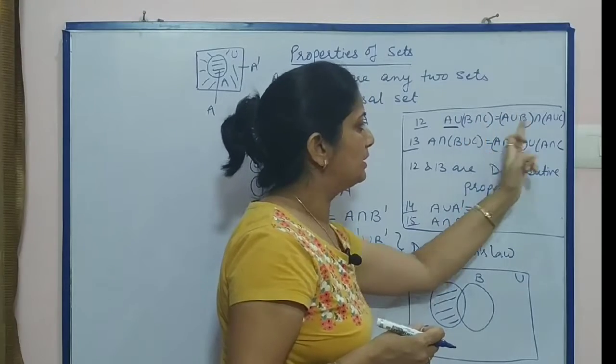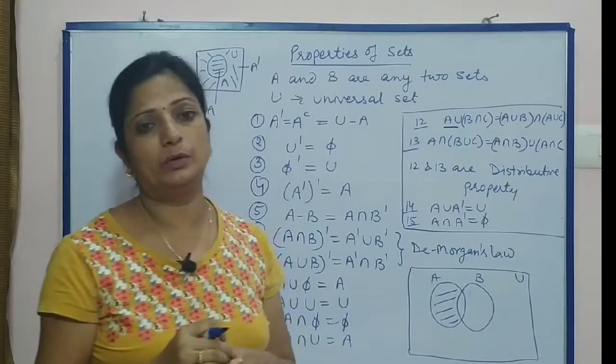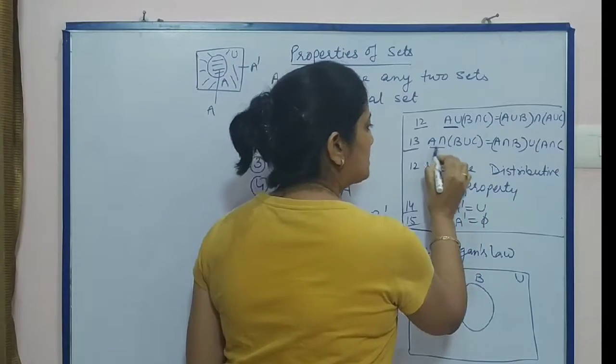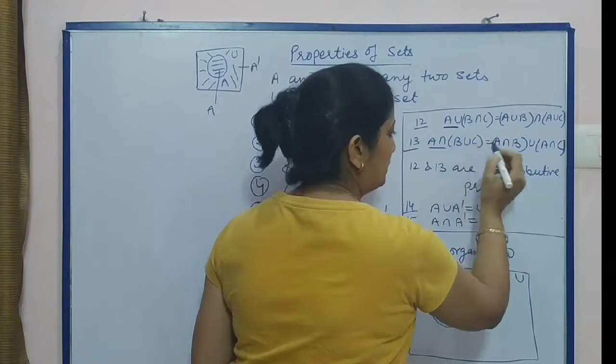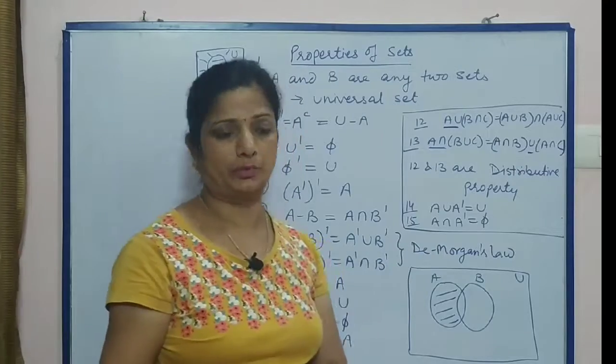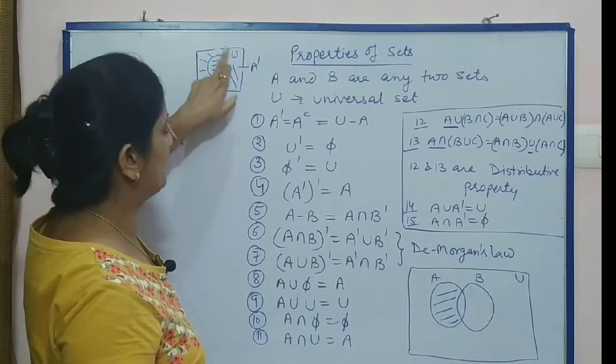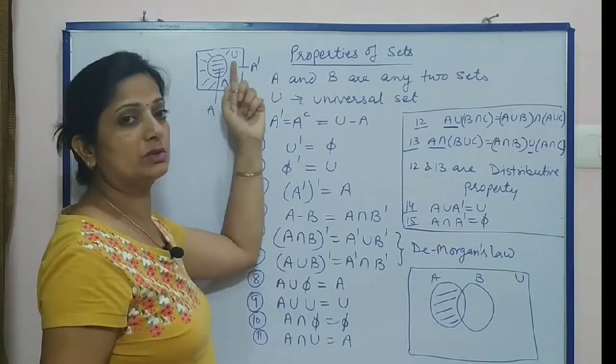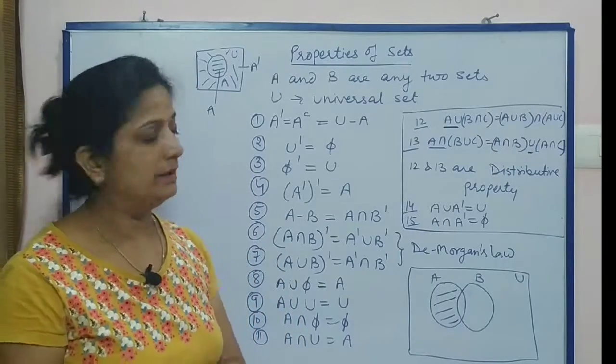That is, A union has to be taken with both B and with C. Whatever is between B and C remains. Similarly, A intersection is distributed - you take A intersection with both terms, and whatever operation is between them remains. This is called the distributive property. A union A dash: A is this portion, A dash is the outer portion, so together they give us the complete universal set. But if we look for common elements in both, A intersection A dash is always an empty set. These are some properties that we use to solve property-based questions.